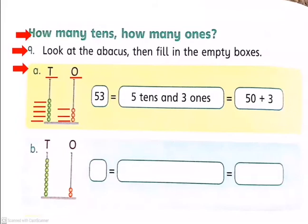5 tens means 50 plus 3. So it will be 53 as it is written. In the next box we will write 5 tens and 3 ones. And in the last box we will write 50 plus 3 as it is written. Now we will do B.